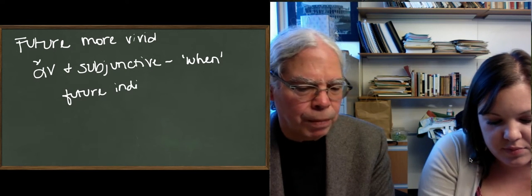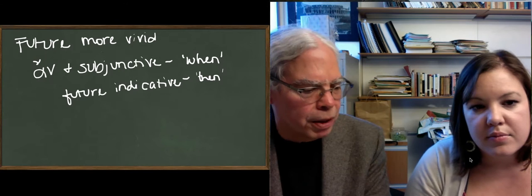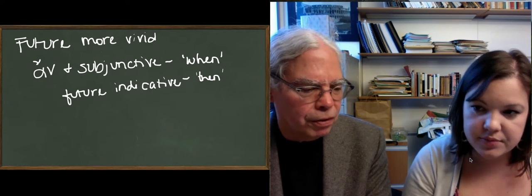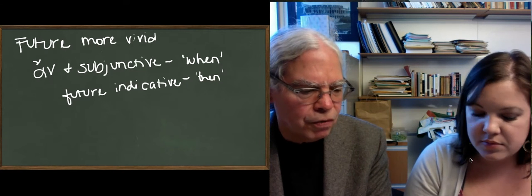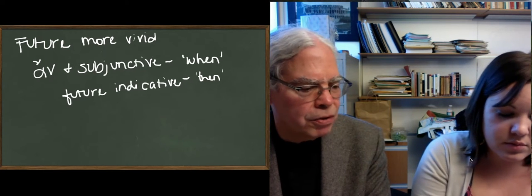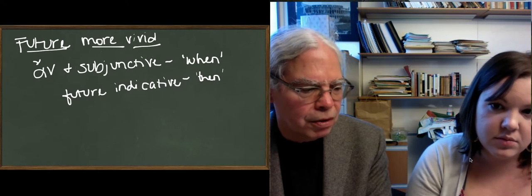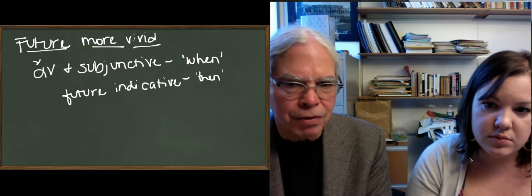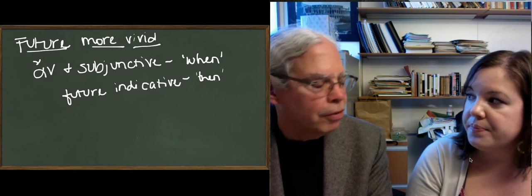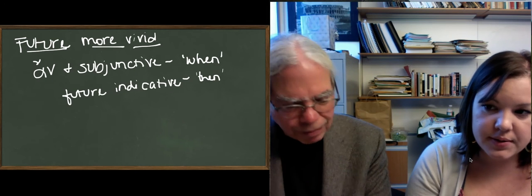To sum up: we've got past definite temporal clauses, which just use the indicative — 'when he built the house, he used bricks'; it's a fact that happened. We've got three kinds of syntax in simultaneous and future temporal clauses that use the syntax of conditional sentences — present and past general, and future more vivid. Present general: 'if he builds houses, he uses bricks.' Past general: 'if he built houses, he used bricks.' And future more vivid: 'if he builds our house, he will use bricks' — not general, but looking forward and still uncertain.